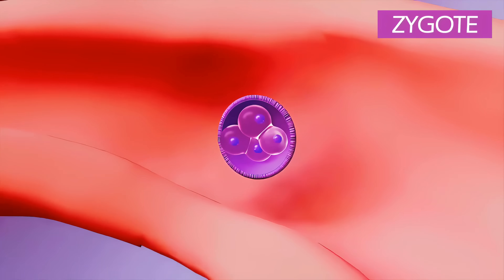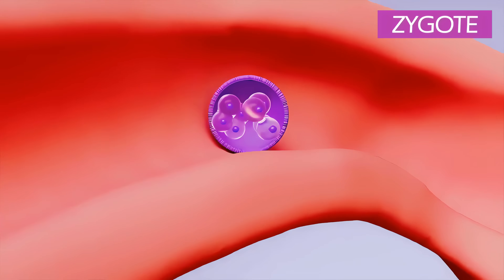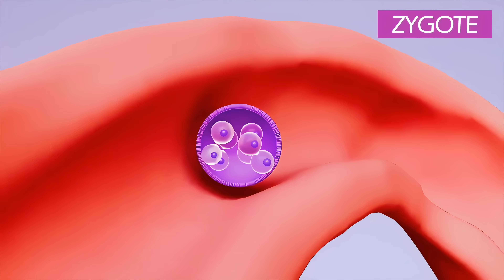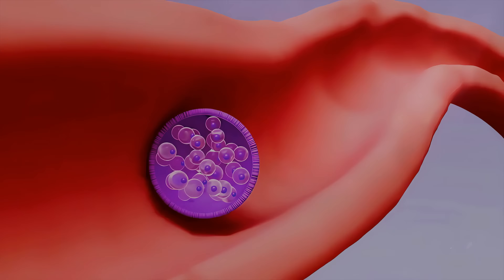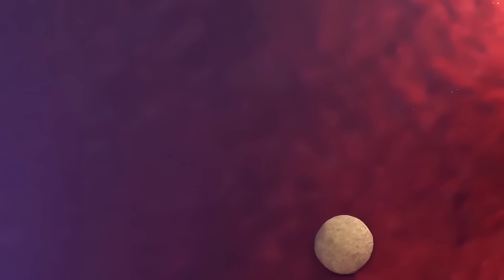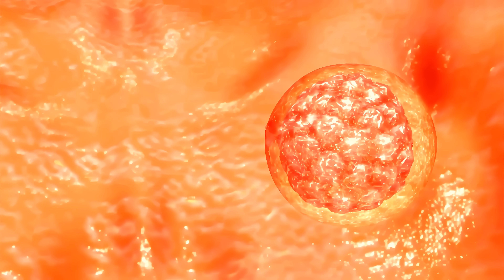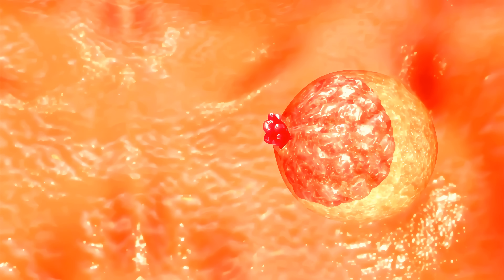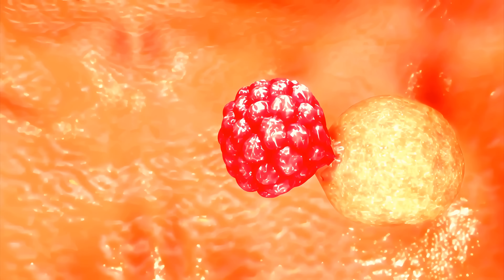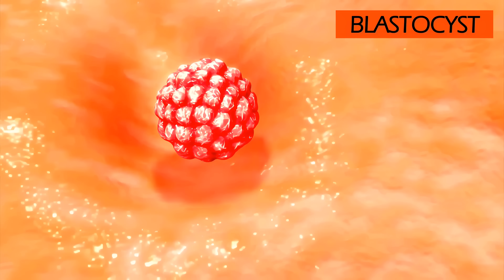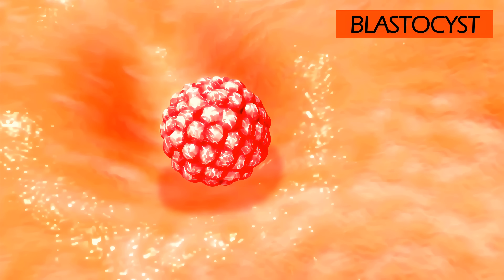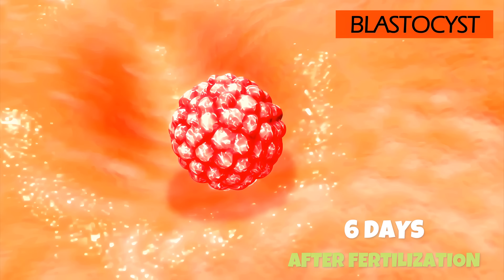The zygote divides multiple times as it travels down the fallopian tube towards the uterus, entering the uterus in 3–5 days. In the uterus, the cells continue to divide, becoming a hollow ball of cells called a blastocyst. The blastocyst implants in the wall of the uterus about 6 days after fertilization.